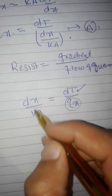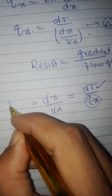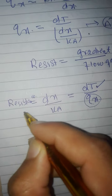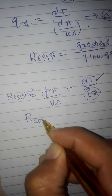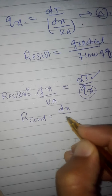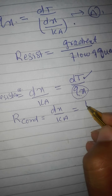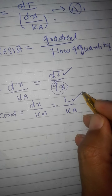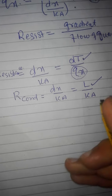So the resistance to conduction heat transfer is equal to L divided by K·A, where L is the length of the wall, K is the thermal conductivity, and A is the cross-sectional area. This is the resistance to conduction heat transfer.